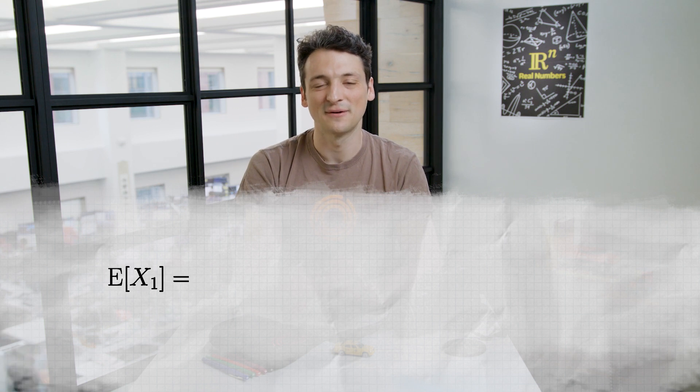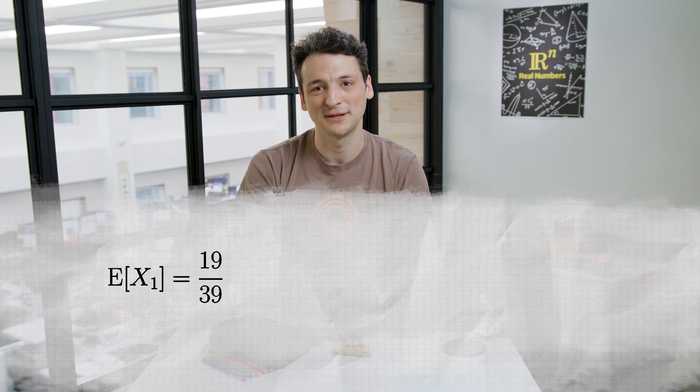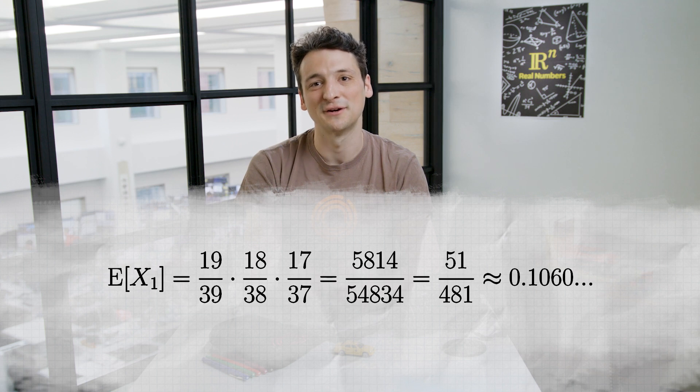The first row has 4 band members. Whichever foot the first player starts with, there are 19 left of the 39 other band members that also start with that foot, so the second member's probability of being instep is 19 over 39. Continuing with band members 3 and 4 of the row, the expected value of x sub 1 is 19 over 39 times 18 over 38 times 17 over 37, which comes to 51 over 481, or about 0.106.